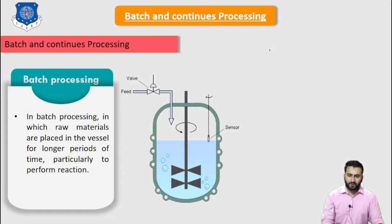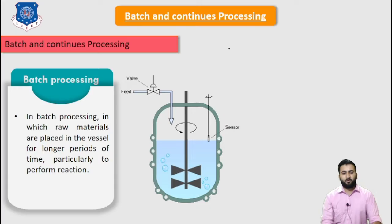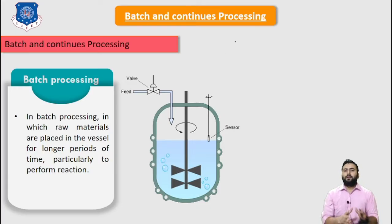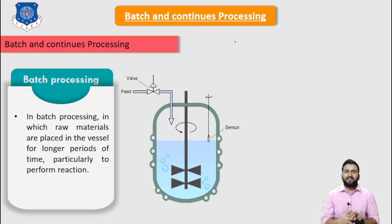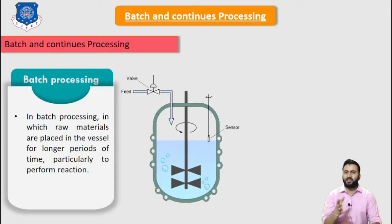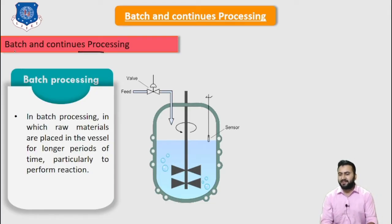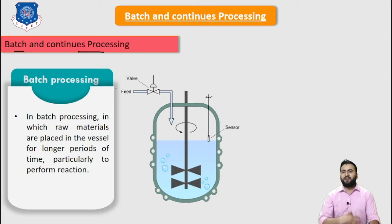Hello students, I am Jamin Pandya. In this lecture we will discuss about the batch and continuous processing. In chemical manufacturing, which is a sub-sector of the manufacturing industry, in most situations it is performed using one of two methods: continuous processing and batch processing. Let's first discuss about the batch processing.